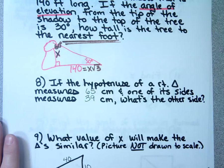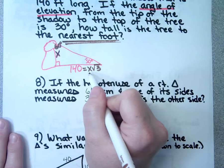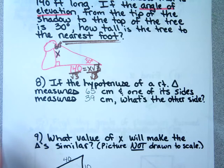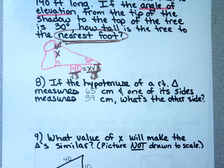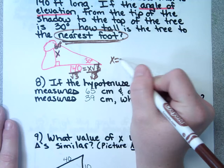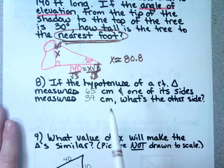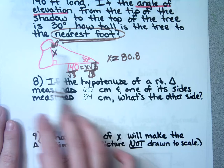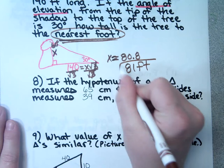What did you get? 80.8. So X is 80.8, and since it says how tall to the nearest foot, the answer is 81 feet. This was nice because we didn't have to multiply by √3 over √3 or rationalize the denominator, since it was asking us to round anyway.